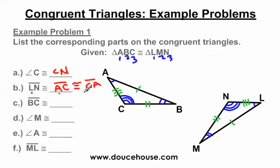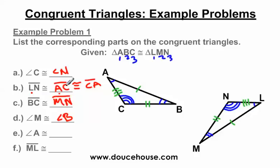Moving on: side BC — B has two arcs and so does M; C has three arcs and so does N. So line segment MN is congruent to line segment BC. Then angle M has two arcs and B has two arcs, so angle M is congruent to angle B. Make sure you put the angle symbols and the line above these sides — if you don't, you'll get it wrong. This is angle N, not just N; this is line segment AC, not just AC. Angle A has one arc and so does L, so angle L is congruent to angle A. And for segment ML: two arcs on M and two arcs on B; one arc on L and one arc on A — so those are the corresponding matching sides and angles.